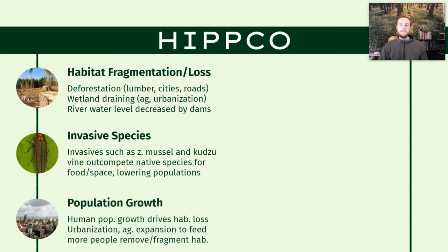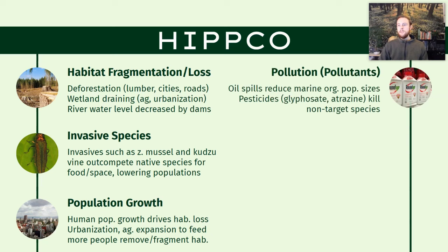The first P is population growth. Because the human population is growing and expanding, it exacerbates all the other problems humans cause in terms of biodiversity. It drives more habitat loss, leads to more urbanization, and requires growing more food for a growing population. So population growth feeds into some of the other causes of biodiversity loss. The second P is pollution — and specifically pollutants, because in AP Environmental we always want to connect to specific pollutants rather than the vague idea of pollution.